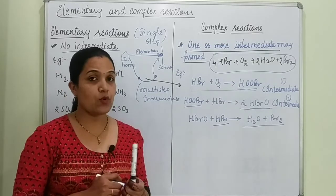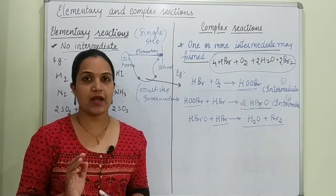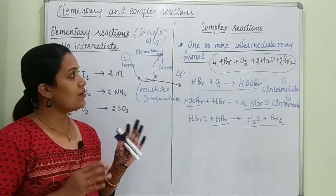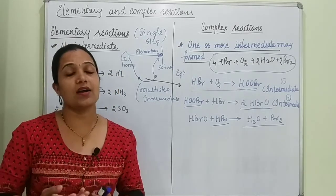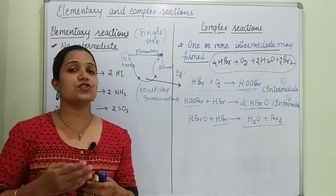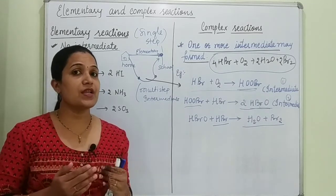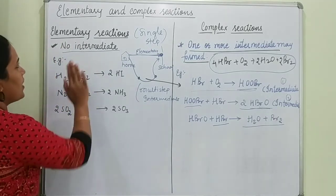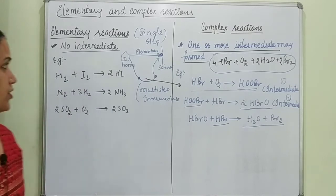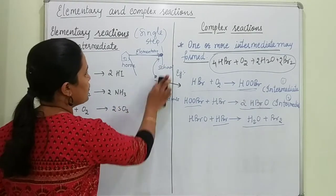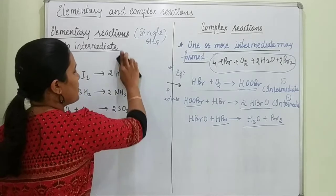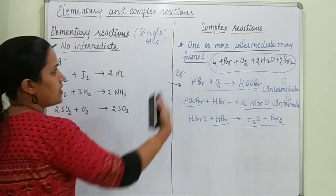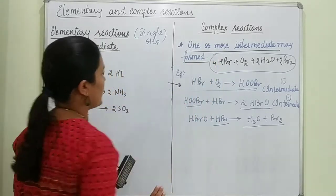I hope the difference between elementary reactions and complex reactions is now clear. Elementary reactions are single-step reactions with no intermediate. Complex reactions involve intermediates forming during the reaction. Now let's see where we can use the concepts of elementary and complex reactions and how we can utilize this in solving questions.